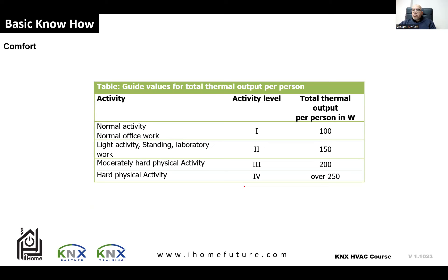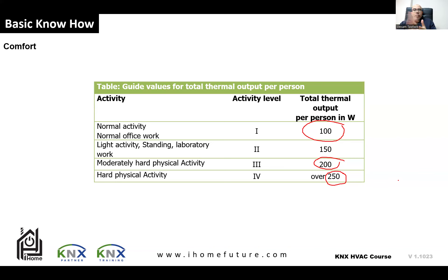For comfort, depending on your activity, your body emits different amounts of thermal energy. With normal activity, the body emits around 100 watts. At the gym or during heavy activity, it might reach 200–250 watts. Therefore, temperature settings in a system depend on the type of activity and type of room — settings for a gym are different from those for a bedroom where people sleep, where activity is less than 100 watts.